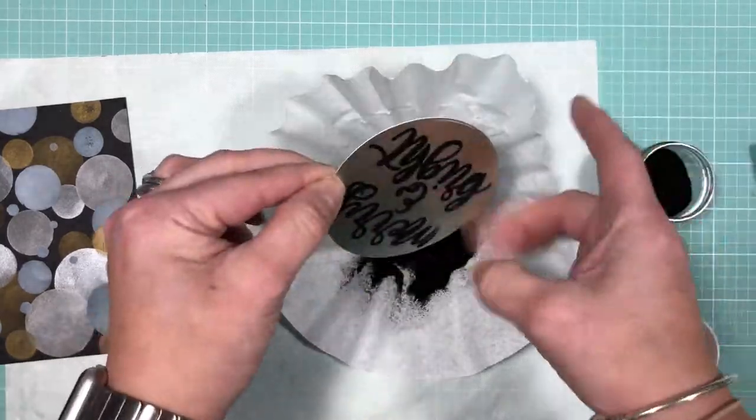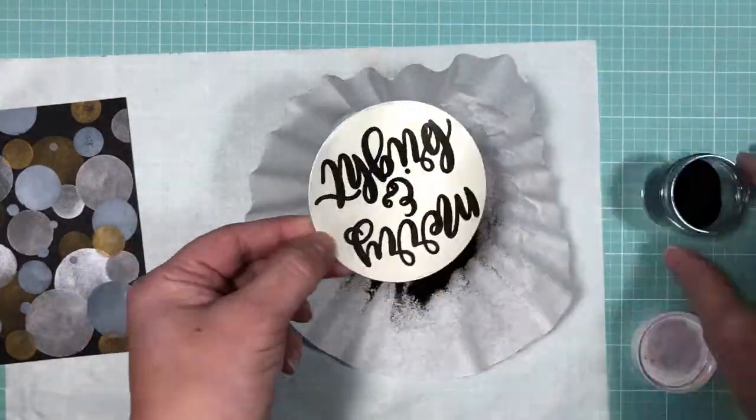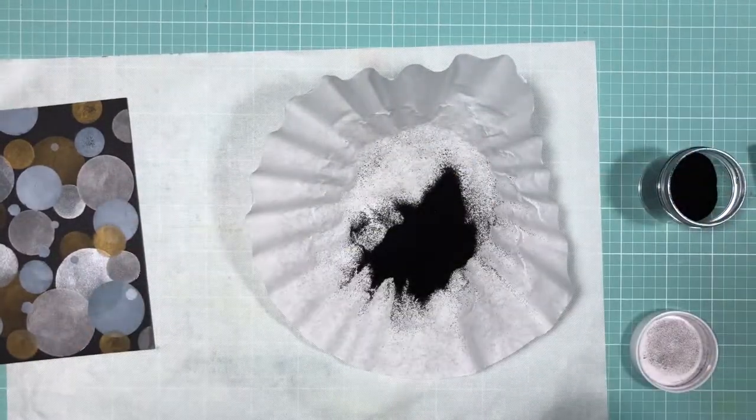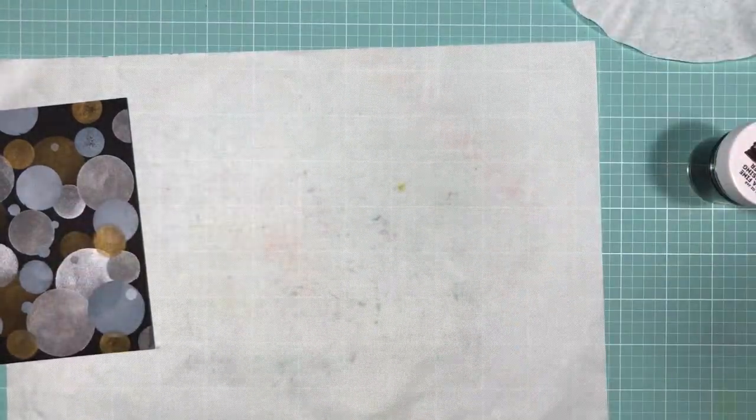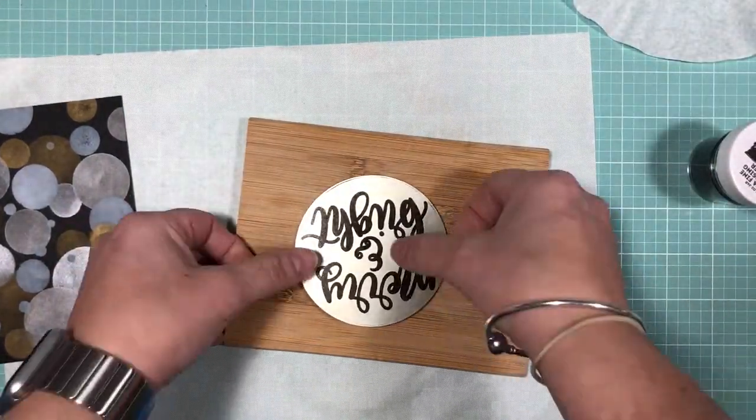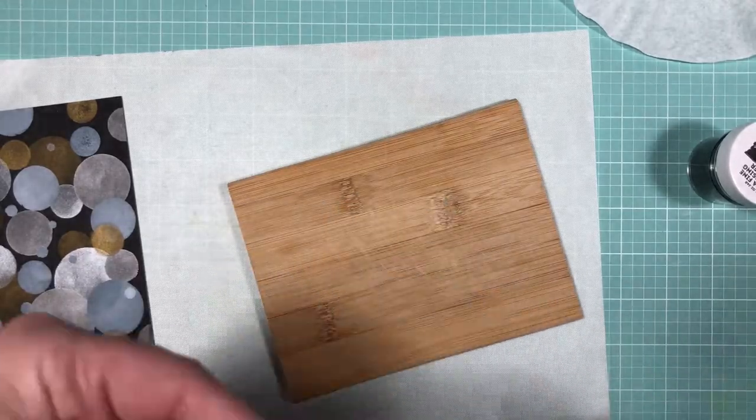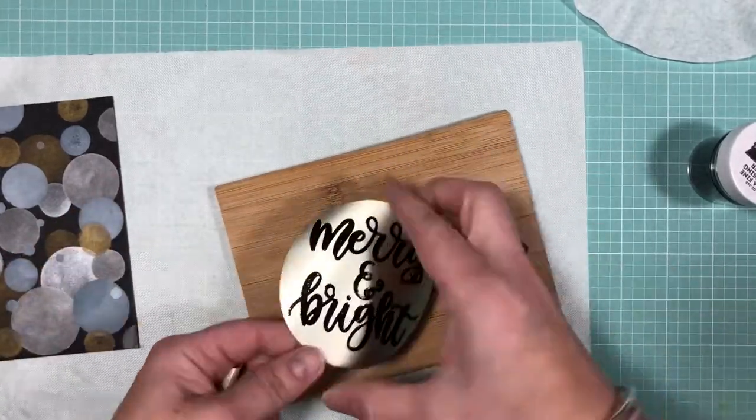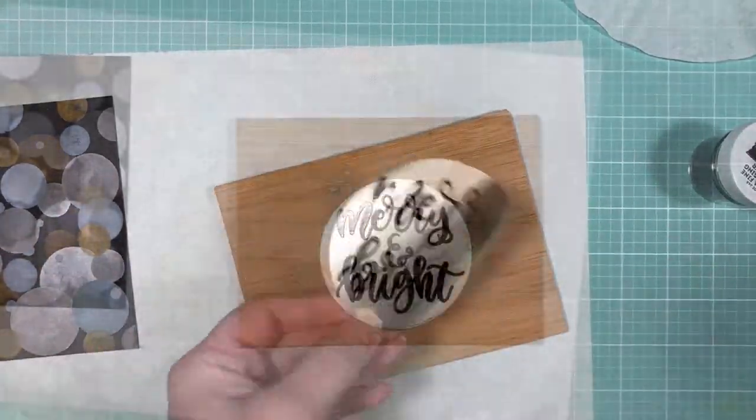To heat set the embossing powder, I'm going to add some rolled up washi tape to the back of the ornament and set it on this small wooden bamboo cutting board and apply heat. But as you saw right there, the metallic paper curled right up and lifted right off the board. It's funny how some papers react differently to heat.